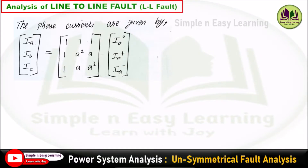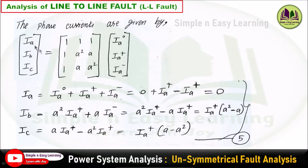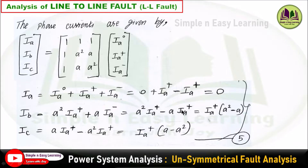Step 5: consider the phase current. The phase current equation is [Ia, Ib, Ic] = T × [Ia0, Ia+, Ia−]. Expanding: Ia = Ia0 + Ia+ + Ia−. Since Ia0 = 0 and Ia+ = −Ia−, these cancel, giving Ia = 0. For Ib: with Ia0 = 0, the expression becomes A²·Ia+ + A·Ia−; substituting Ia− = −Ia+ gives Ib = (A² − A)·Ia+. Similarly, Ic = A·Ia+ − A²·Ia+ = (A − A²)·Ia+. This is equation 5.